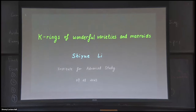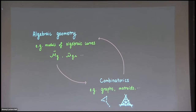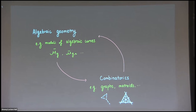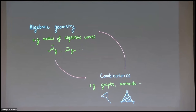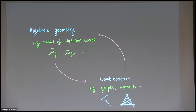Our last talk is Shiyue Li, and she will tell us about K-rings of wonderful varieties in matroids. Thanks for having me. A little bit of context: I grew up in the land of moduli spaces of algebraic curves, studying moduli spaces with arbitrary genus and arbitrary decorations, and combinatorics comes to help a lot. I'm motivated by problems in graph theory and matroids, and also interested in tropical geometry. This talk will be one instance of such interaction between these objects.